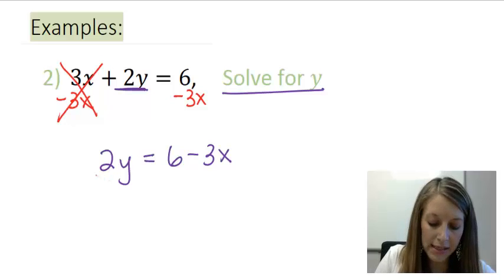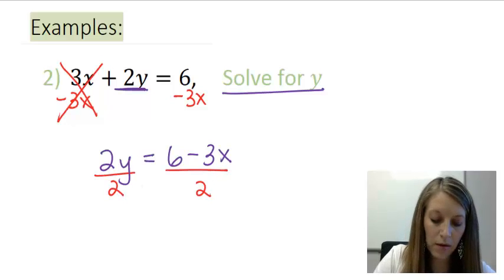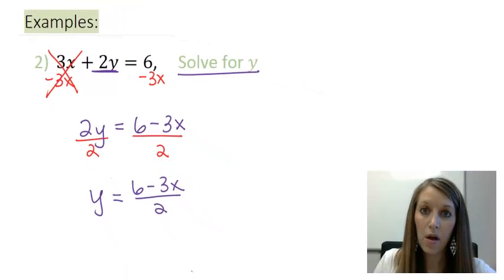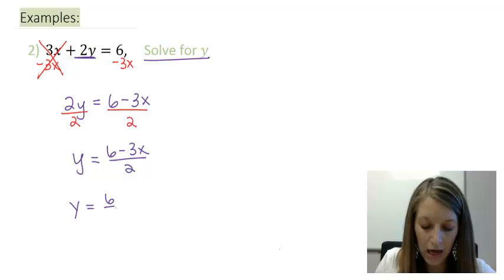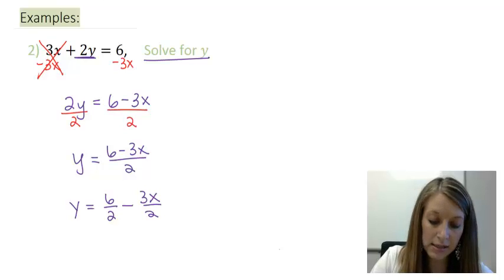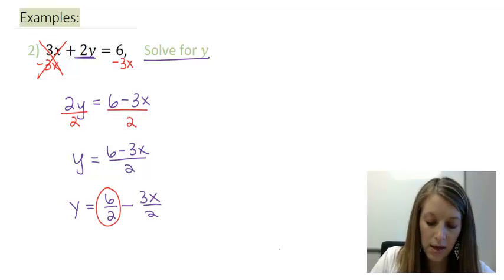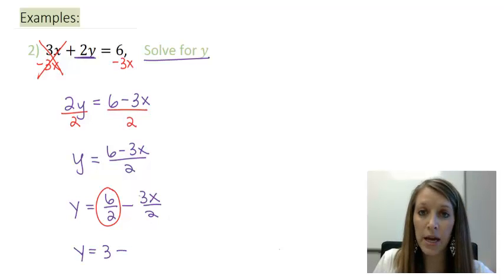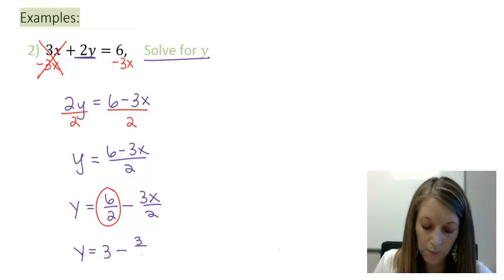To get my y completely isolated, I divide by 2, and that gives me y is equal to, I can leave it as one big expression like this, or I can actually separate it out. Since I only have one denominator, I can put each of those terms over that denominator separately. The advantage to doing that, then, is then I can simplify some of this here. 6 divided by 2 gives me 3, and then I can write this as minus 3x over 2, or I can even manipulate it and write it as negative 3 halves times x.